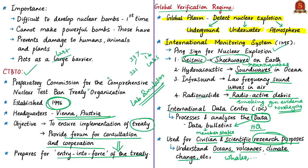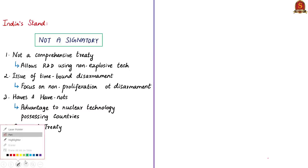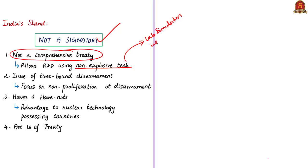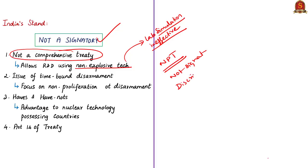India's stand on the CTBT: India did not sign this treaty for several reasons. First, India says it is not a comprehensive treaty because it permits nuclear weapon states to continue weapons-related research and development using non-explosive technologies such as lab simulation testing, making it an ineffective treaty without a clear provision prohibiting lab or simulation testing. India is also not a signatory to the NPT, which India considers discriminatory as it designates only five countries as permitted to have nuclear weapons.